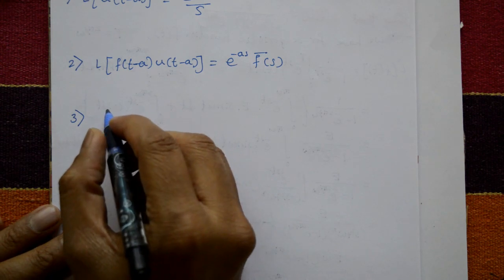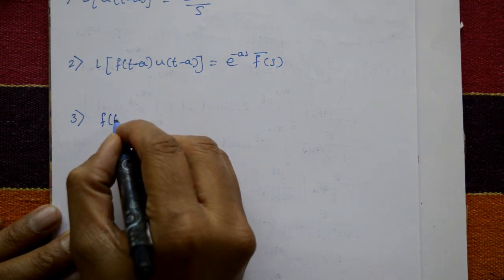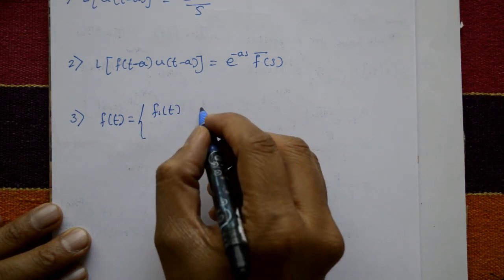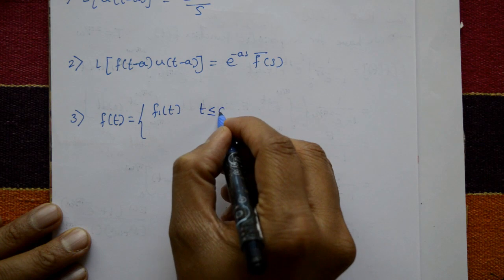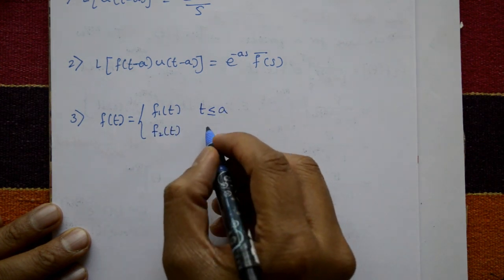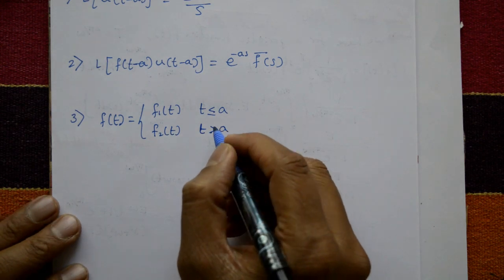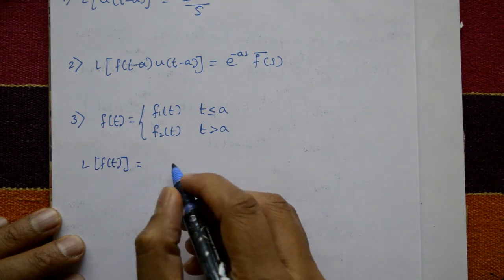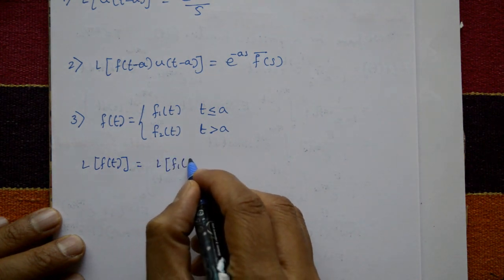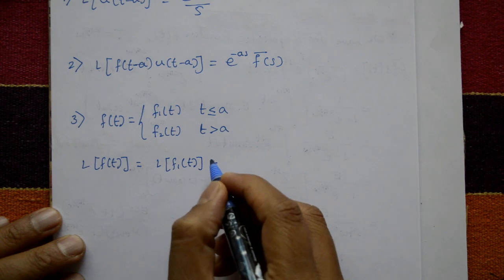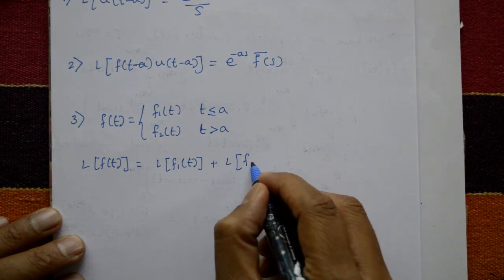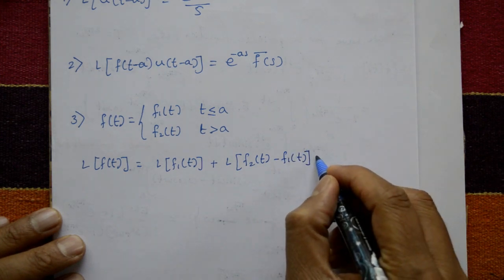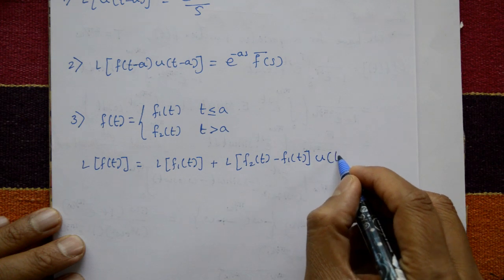Third property: a discontinuous function f(t) is defined as f1(t) when t is less than or equal to a, and f2(t) when t is greater than a. The Laplace of f(t) is equal to Laplace of f1(t) plus Laplace of [f2(t) minus f1(t)] into u(t minus a).